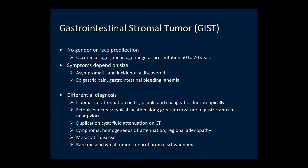GIST have no race or gender predilection and occur in all ages, with a mean presentation age of 50 to 70 years. Gastric GIST are often incidentally discovered when small and benign; when larger, they can cause epigastric pain, gastrointestinal bleeding, and anemia. Differential diagnosis includes lipoma, ectopic pancreas near the pylorus along the greater curvature, duplication cysts if the lesion contains fluid, lymphoma, metastatic disease, and rarely other mesenchymal tumors such as neurofibroma and schwannoma.